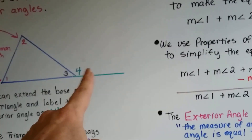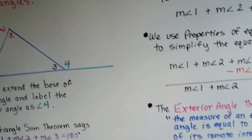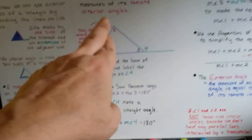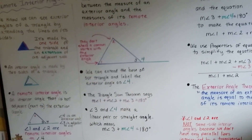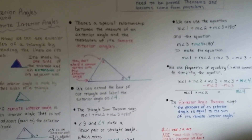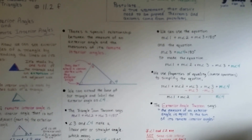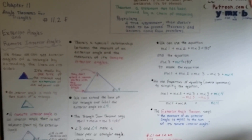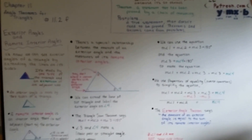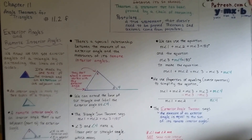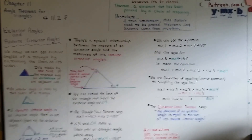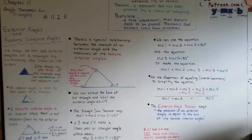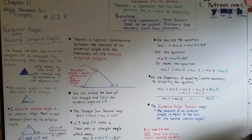Angles three and four equal 180 because of this straight line and that extension. It's not intersected by a transversal. We're going to continue on to number 11.2G — believe it or not, we've got more videos in this unit. I hope you're doing okay, having a great day, and that your homework's not too hard. I hope you understood this. I'll see you next video. Bye.